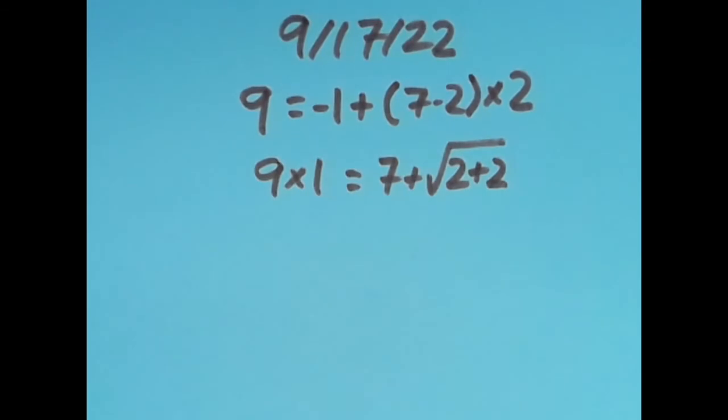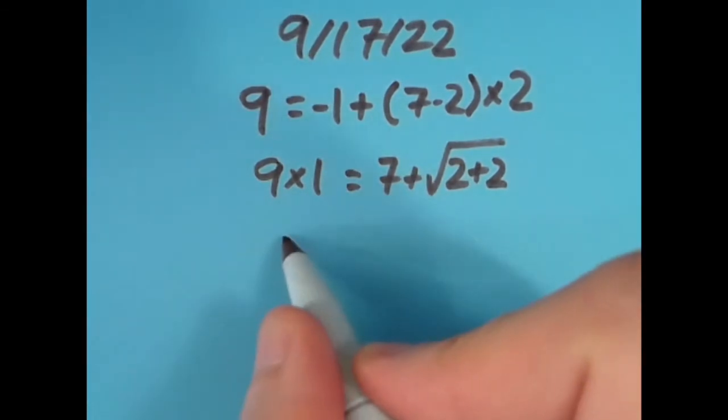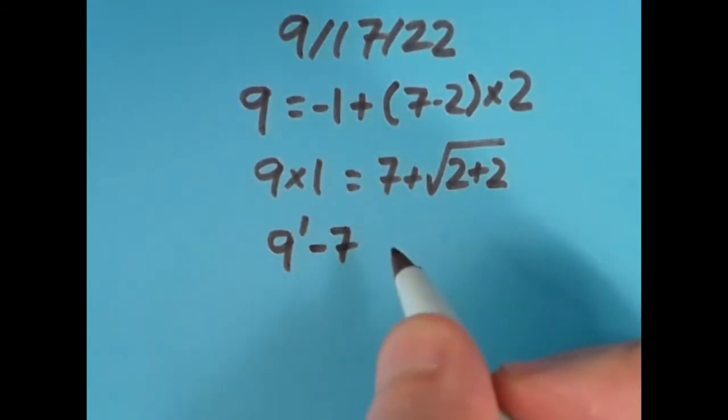Did it again with the equal sign one more spot to the right. Here I said that 9 to the first power, which is 9, minus 7 gives us 2, and so does the square root of 2 squared because the square root of 4 is 2.